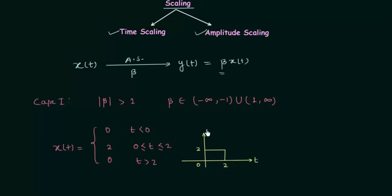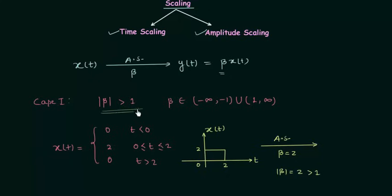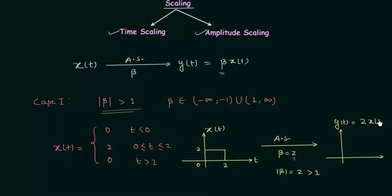This is how the waveform of the original signal x(t) will look. Now we will perform amplitude scaling with β equal to 2. The modulus of β is also equal to 2, which is greater than 1, so this condition is satisfied. After amplitude scaling, the new signal y(t) is equal to β times x(t), and since β equals 2, y(t) is equal to twice x(t).